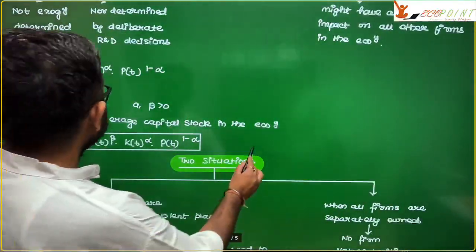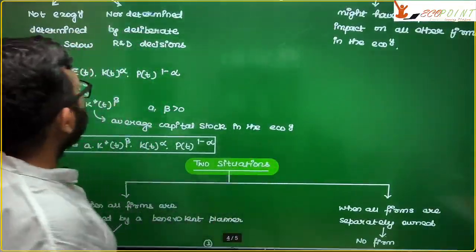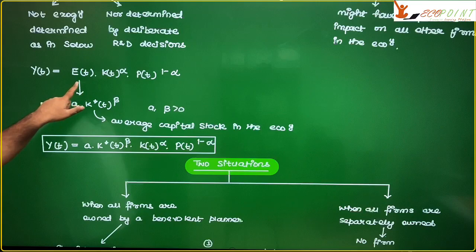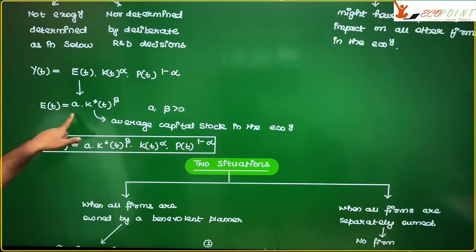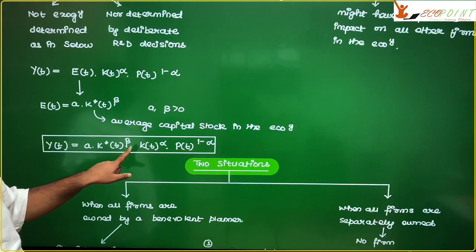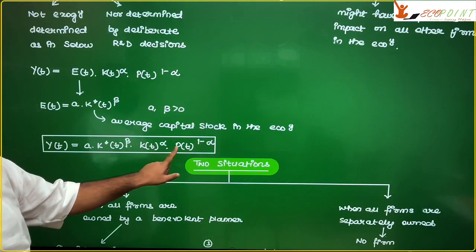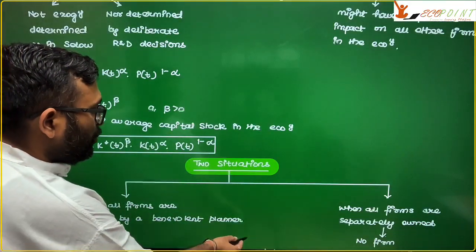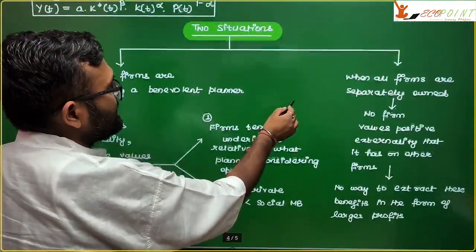So, the productivity is dependent upon the average capital stock in the economy. And a and beta, they are constant. So, now what I can see is that I can write y_t is equal to e_t. e_t is a k star t to the power beta into k_t to the power alpha, p_t to the power 1 minus alpha.